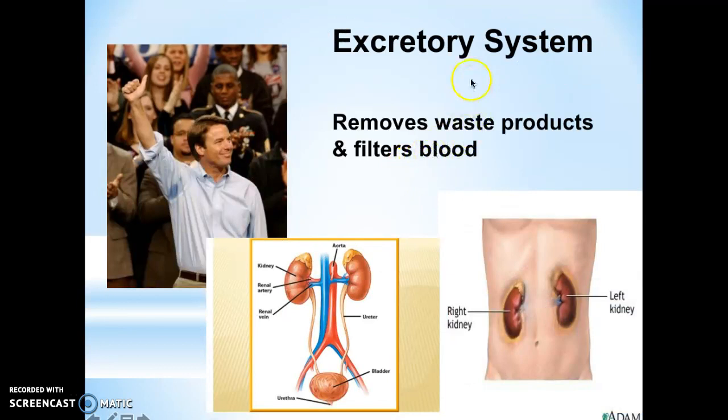The next one is the excretory system, and the excretory system's job is to remove waste products and filter blood. Basically, this is made of your kidneys, which are the filters for your blood. The blood goes in with a lot of different toxins and chemicals, and then they are filtered through the kidneys and sent back to your body a lot cleaner. The main job is to clean up your blood. Parts of this system include the kidney, the ureter, the bladder, and then the urethra.